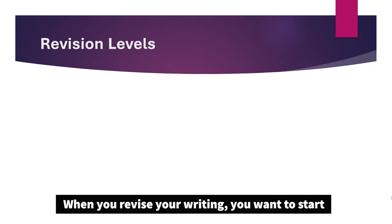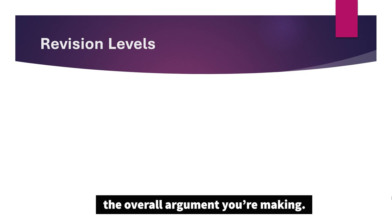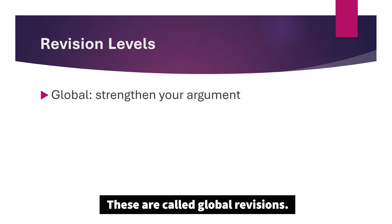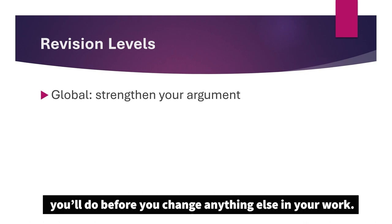When you revise your writing, you want to start with the biggest, most important features of writing first — the overall argument you're making. These are called global revisions. Think of these as big picture revisions that you'll do before you change anything else in your work.